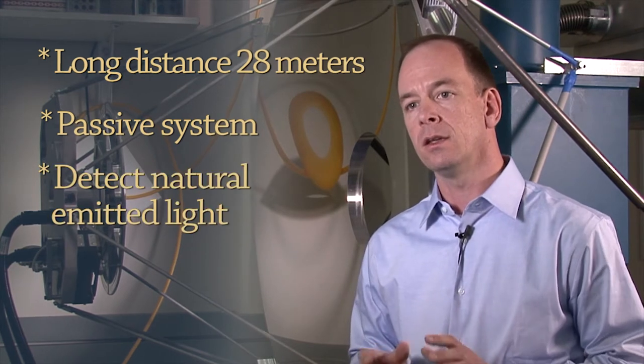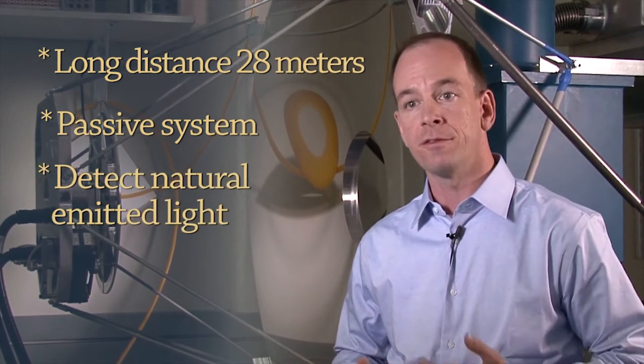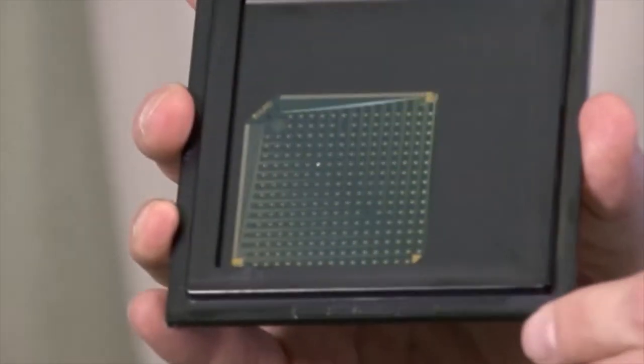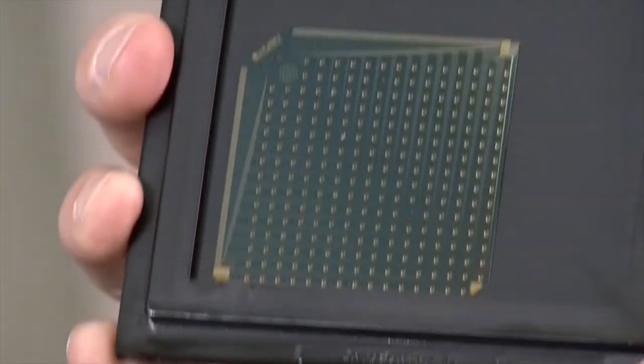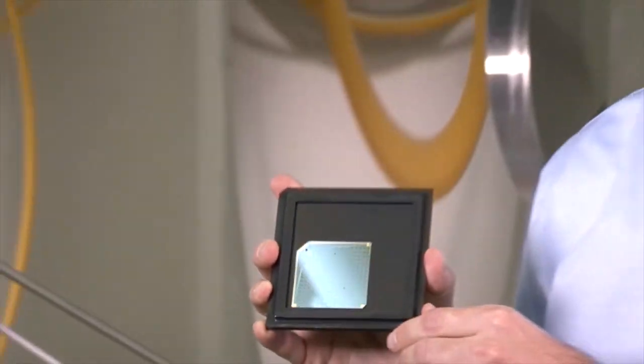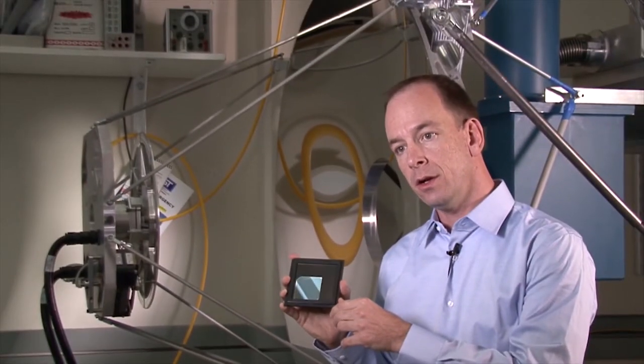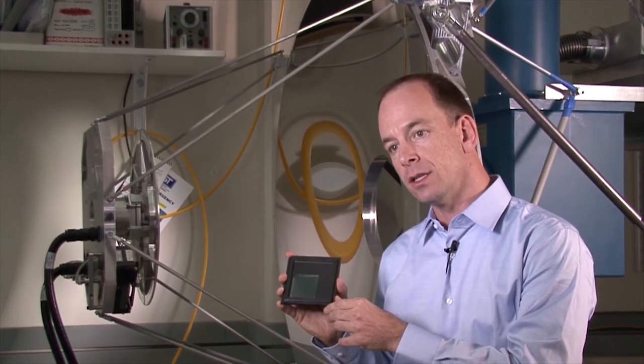Instead, it's just detecting the natural light that is either emitted or reflected by those objects. There are 251 detectors in the system. They're located on a wafer that looks exactly like this one and they're sensors that were developed here at NIST and they act like very sensitive thermometers.